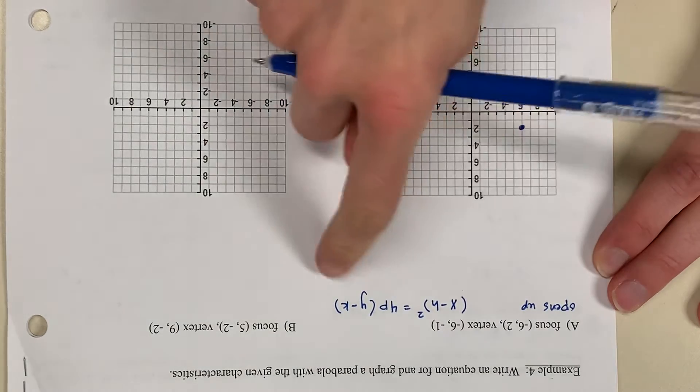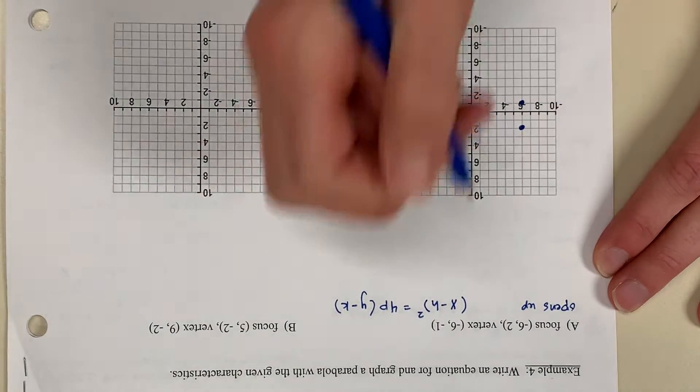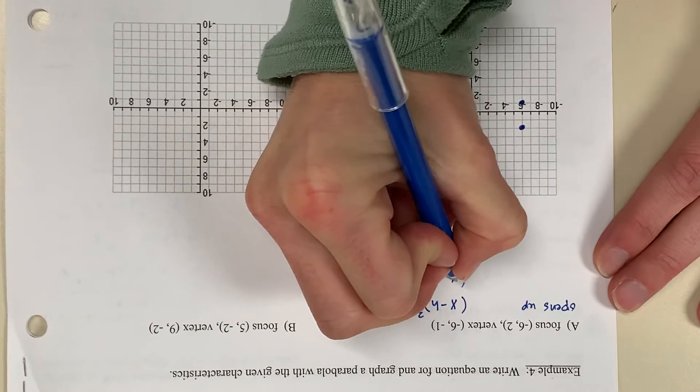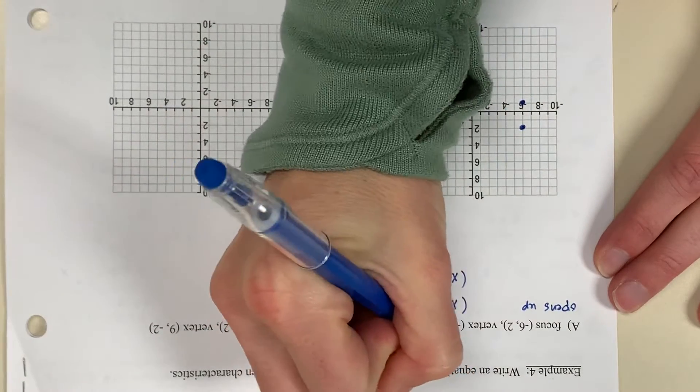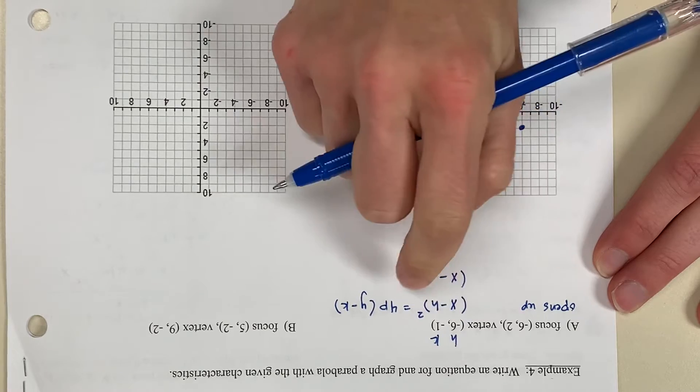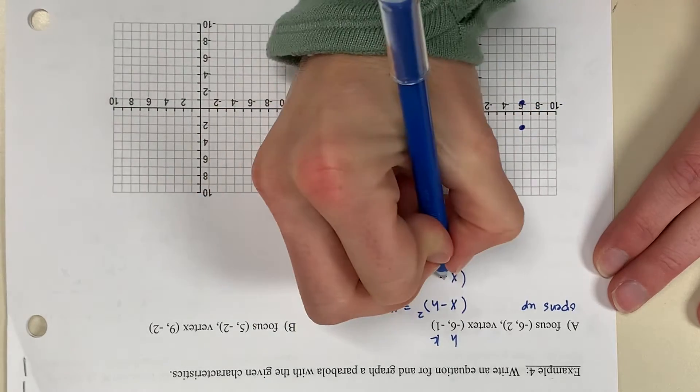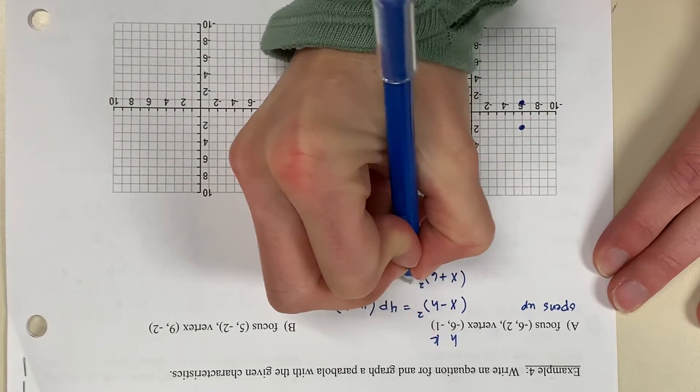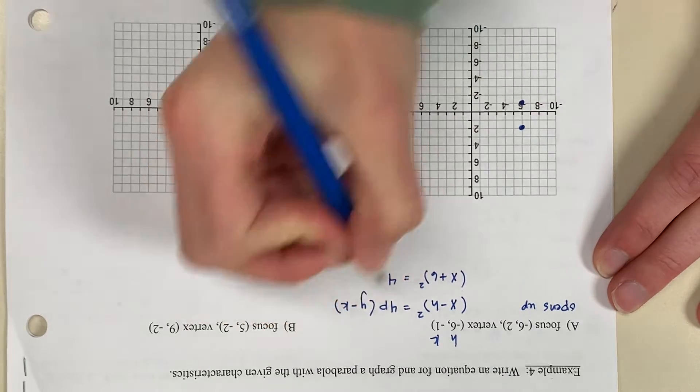Okay, h and k are the vertex. So this is x minus... Now h is negative 6. The opposite of negative 6 is a positive 6. 4 times p.